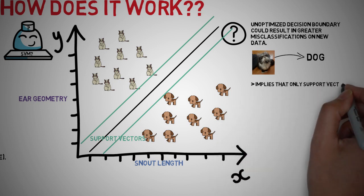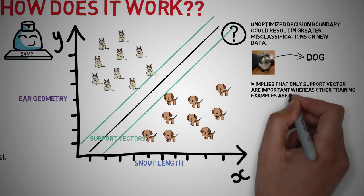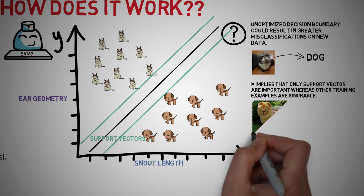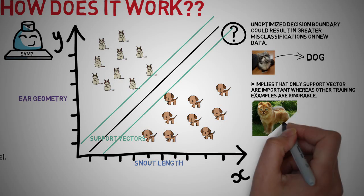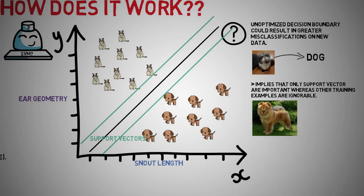The algorithm basically implies that only support vectors are important, whereas training examples are ignorable. An example of this is so that if we have, in our case, a dog that looks like a cat or a cat that is groomed like a dog, we want our classifier to look at extremes and set our margins based on these support vectors.